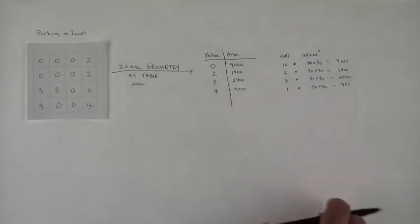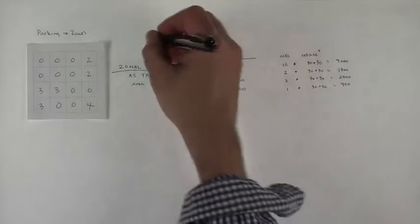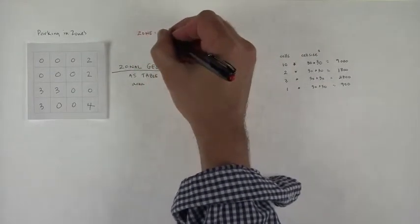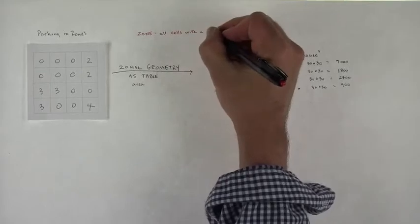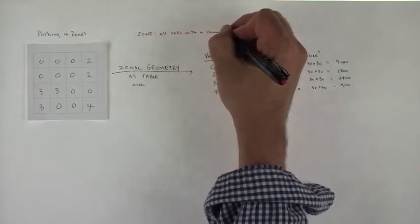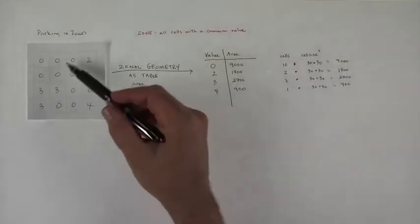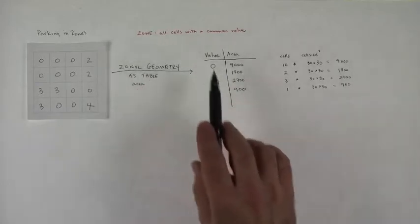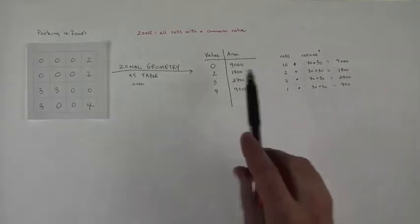The main idea here is that you have a zonal geometry because a zone is equal to all cells with a common value. They don't have to be contiguous. In this case, the cells are all kind of contiguous, but they don't even have to be. A zone is going to be defined by all the cells with a common value, and so this is giving you the area of zone zero, etc. Hopefully that makes sense.